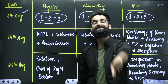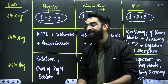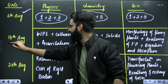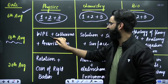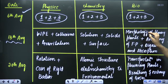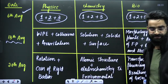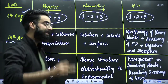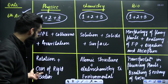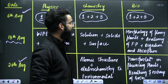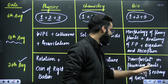So whatever syllabus was there in tests one, two and three — all those chapters will again be asked in this combined test, with no new chapters apart from what's already done. Now talking about the fifth test: from physics it's work, power, energy, collisions and gravitation. From chemistry it's solutions, solid state and surface chemistry. From biology it's morphology of flowering plants, anatomy of flowering plants, and digestion and absorption. And on 20th of August, the sixth test: from physics it's rotation and center of mass of rigid bodies. From chemistry it's atomic structure, electrochemistry and environmental chemistry. From biology it's transportation in flowering plants, and breathing and exchange of gases.